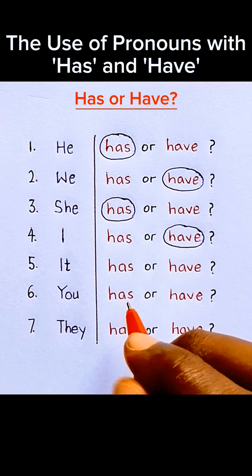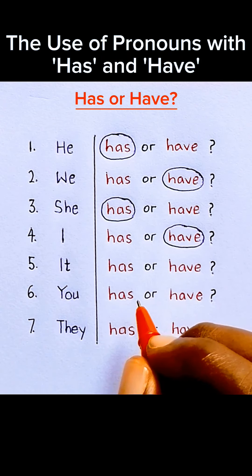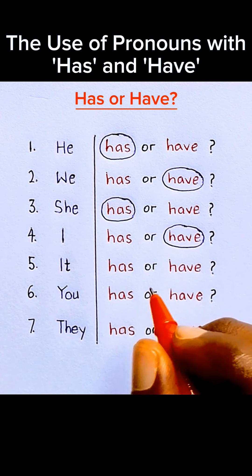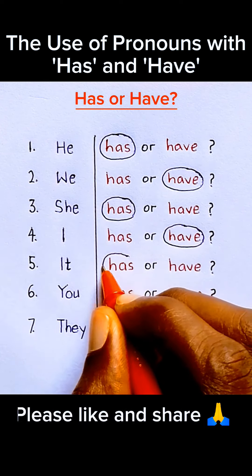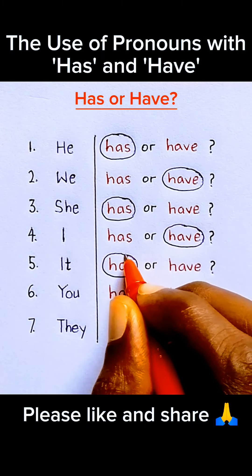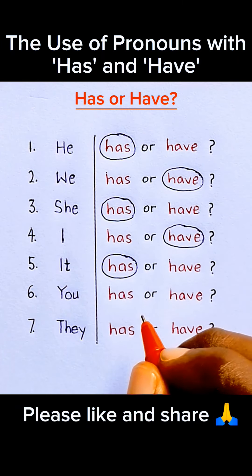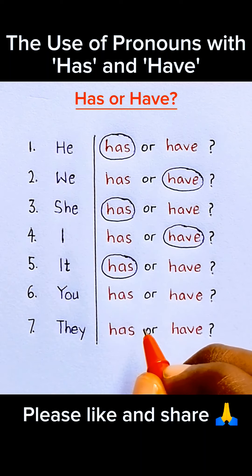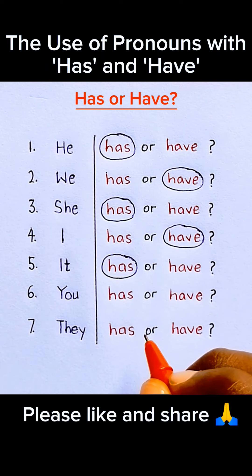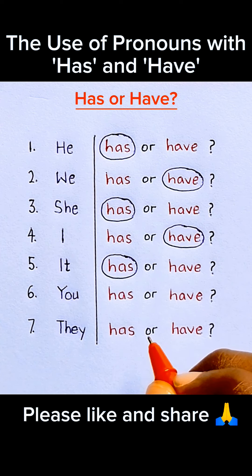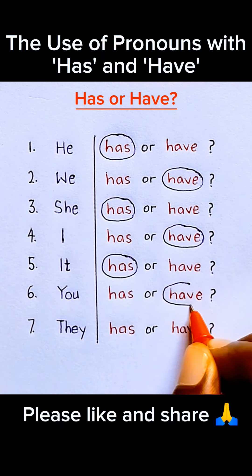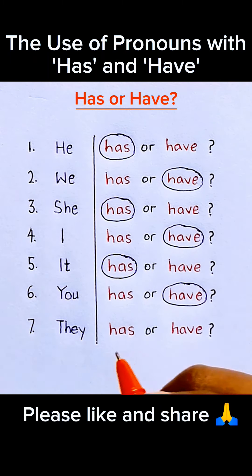Number five: 'it'. It is a singular subject and it goes with 'has', so we say 'it has', not 'it have'. Number six: 'you'. You is both singular and plural, but it always goes with the plural verb 'have', so we say 'you have', not 'you has'.